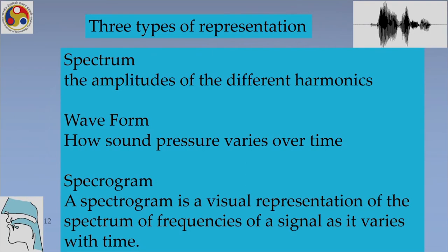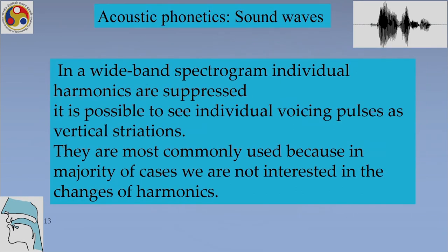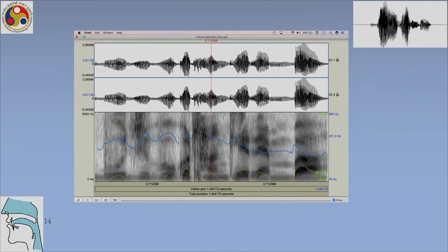Speech sounds are represented in three different ways. The spectrum shows the amplitudes of the different harmonics. The waveform shows how sound pressure varies over time. And a spectrogram is a visual representation of the spectrum of frequencies of a signal as it varies with time. Here you can see a wide band spectrogram below and a waveform above for an entire sentence.